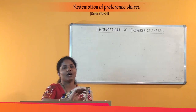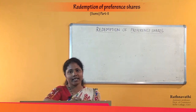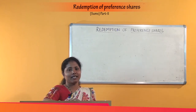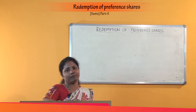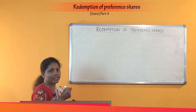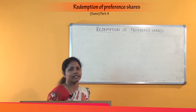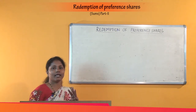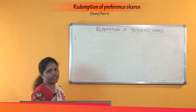All the preliminary works for passing accounting entries for redemption of preference shares were explained in the last session. In this session, let us proceed with the accounting entries for redemption of preference shares. Let us pass the entries under the first step — which involves entries for fresh issue of shares, fresh issue of debentures if any, and sale of fixed assets if any. Here all three items are present.